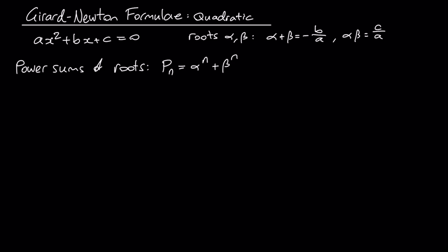The 0th power sum, which is alpha to the 0 plus beta to the 0, is just 1 plus 1, which equals 2. The first power sum is alpha plus beta, which equals minus b over a.